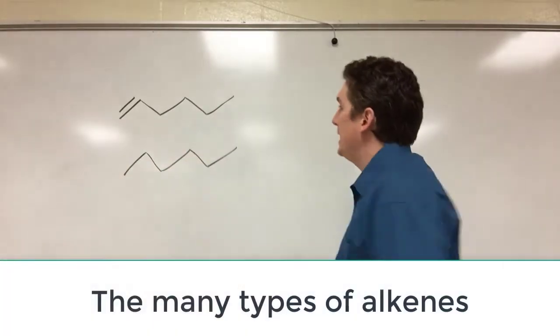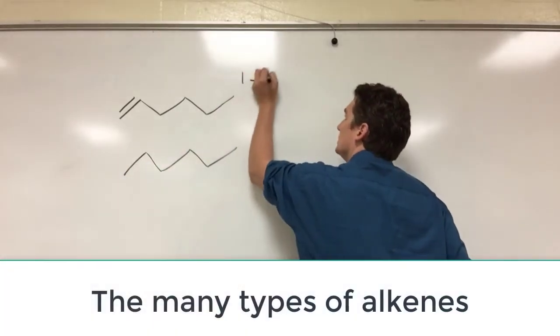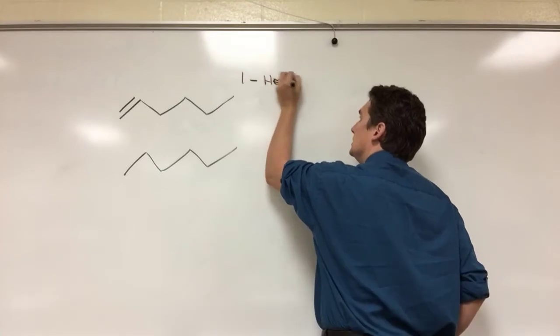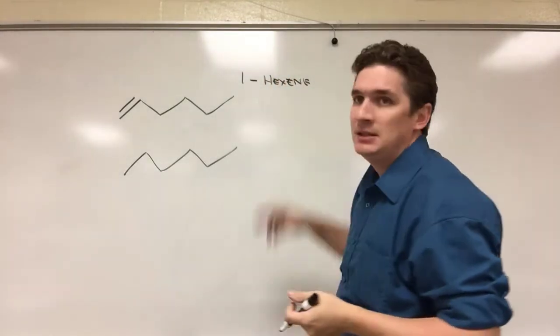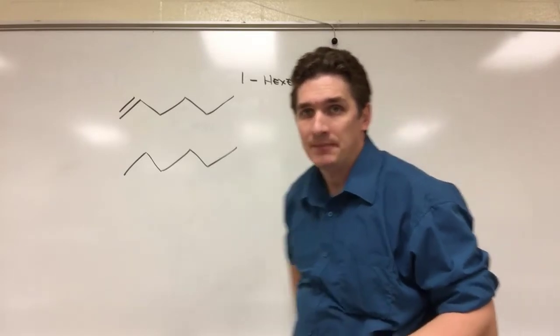So what I've got up here is the simple 1-hexene. You should be able to name it. It's a terminal alkene and we just have the E-N-E here to designate that we have a double bond.